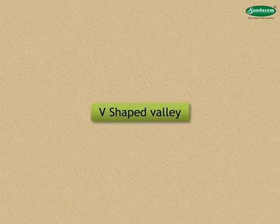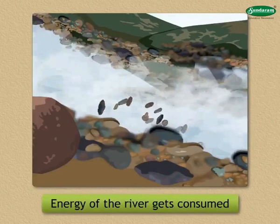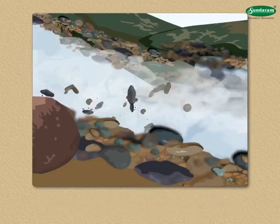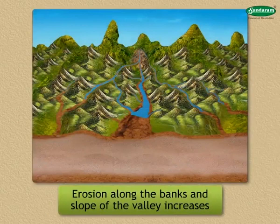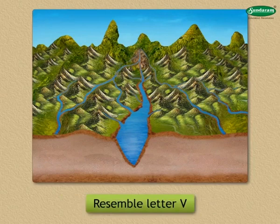Second, the V-shaped valley. Over a period of time, the amount of load in the flow starts increasing. More and more energy of the river gets consumed in transporting the material. As a result, there is less erosion of the bed. However, the erosion along the banks and the slopes of the valley increases. Hence, the slope recedes and the valley with near vertical sides becomes wider, resembling the letter V. For example, V-shaped valleys in the Western Ghats.